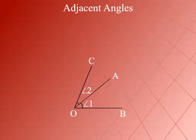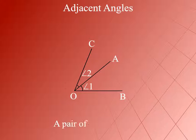Adjacent Angles. Observe the two angles, angle 1 and angle 2, in each of the given figures. Each pair has a common vertex O and a common arm or side OA in between OB and OC. Such a pair of angles is called a pair of adjacent angles.